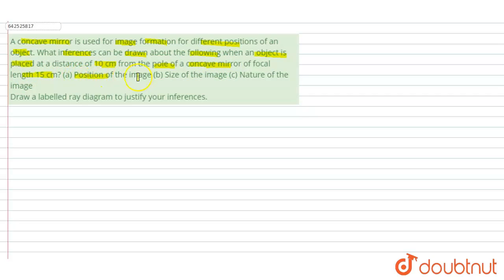Part A: position of the image, Part B: size of the image, Part C: nature of the image. And draw a labelled ray diagram to justify your inferences.